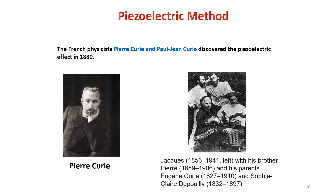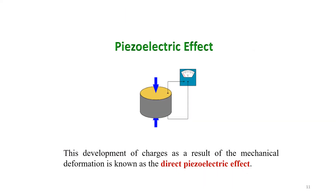The other method used for generation of ultrasonic sound waves is the piezoelectric method, based on the principle of the piezoelectric effect. Two French physicists, Pierre Curie and Paul Jean Curie, discovered the piezoelectric effect in 1880. The piezoelectric effect states that whenever mechanical pressure is applied to piezoelectric materials — quartz being a well-known example — there will be generation of charges across it. The development of charges as a result of mechanical deformation is known as the direct piezoelectric effect.